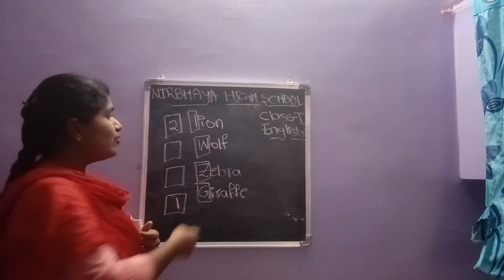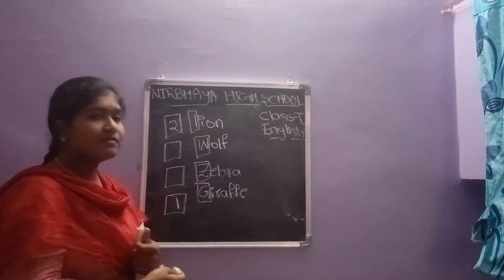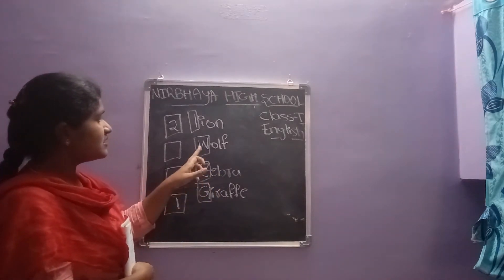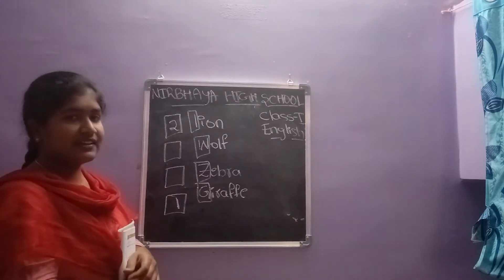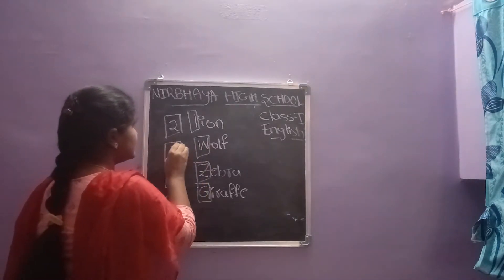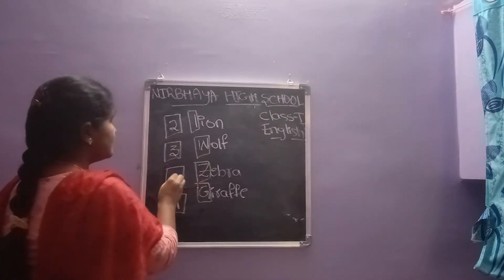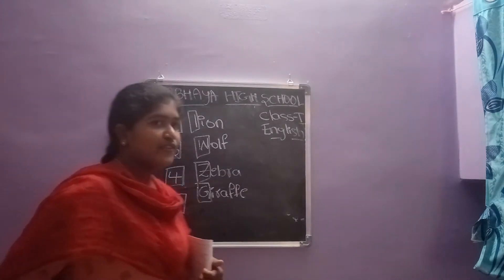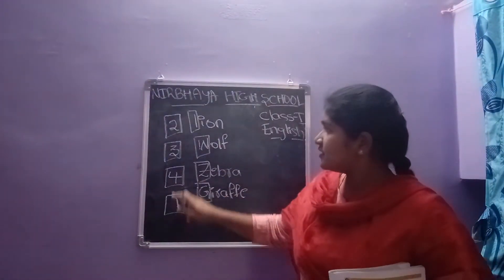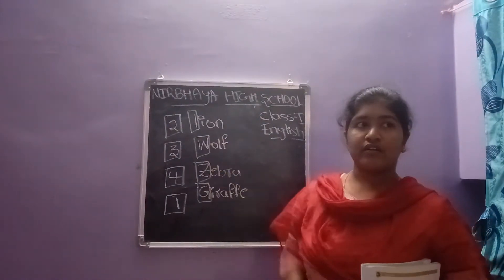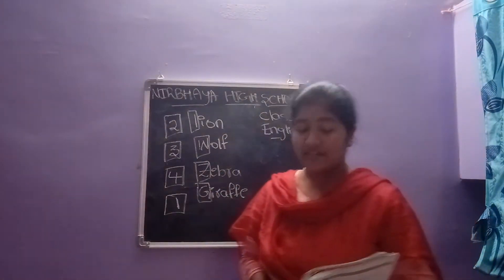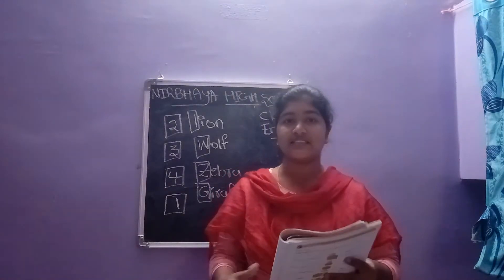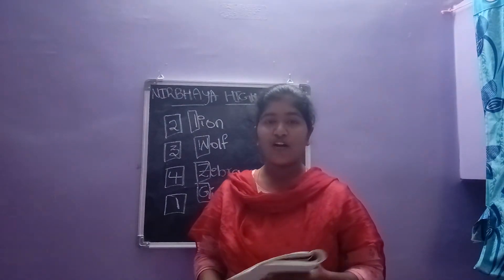Next, which one comes third? W or Z — W comes first. So wolf is the third one, and zebra is the fourth one. So the alphabetical order is 1, 2, 3, 4. This is the alphabetical order. Very easy, children. So you have to do the vehicles and things — keep them in alphabetical order.